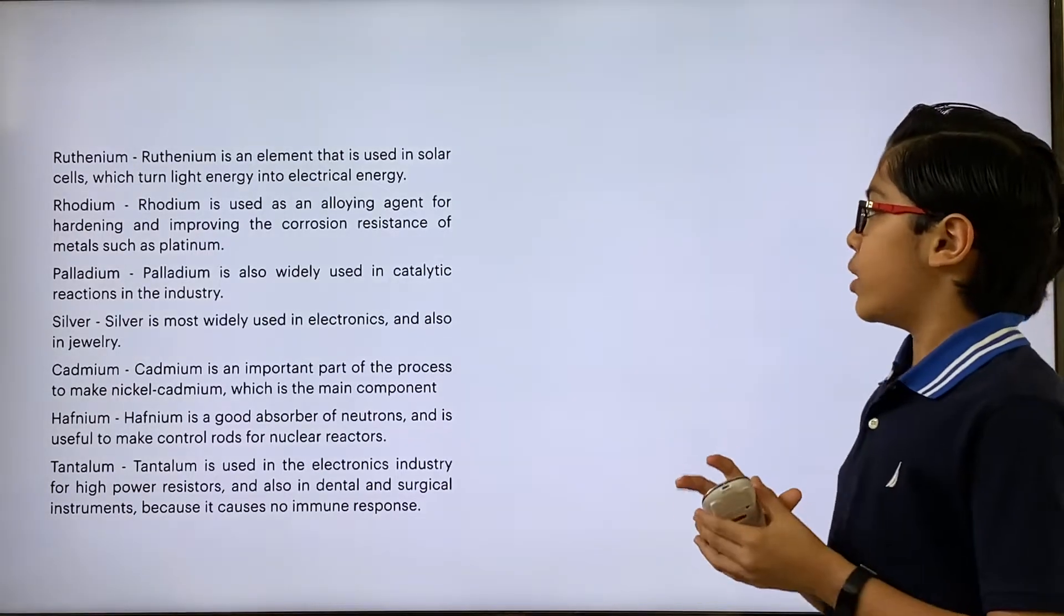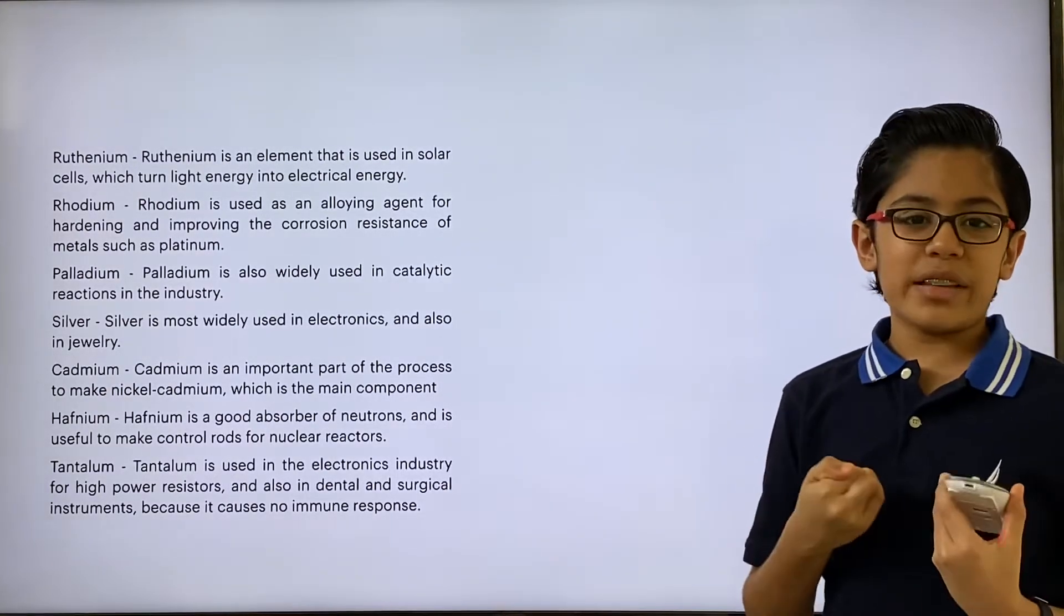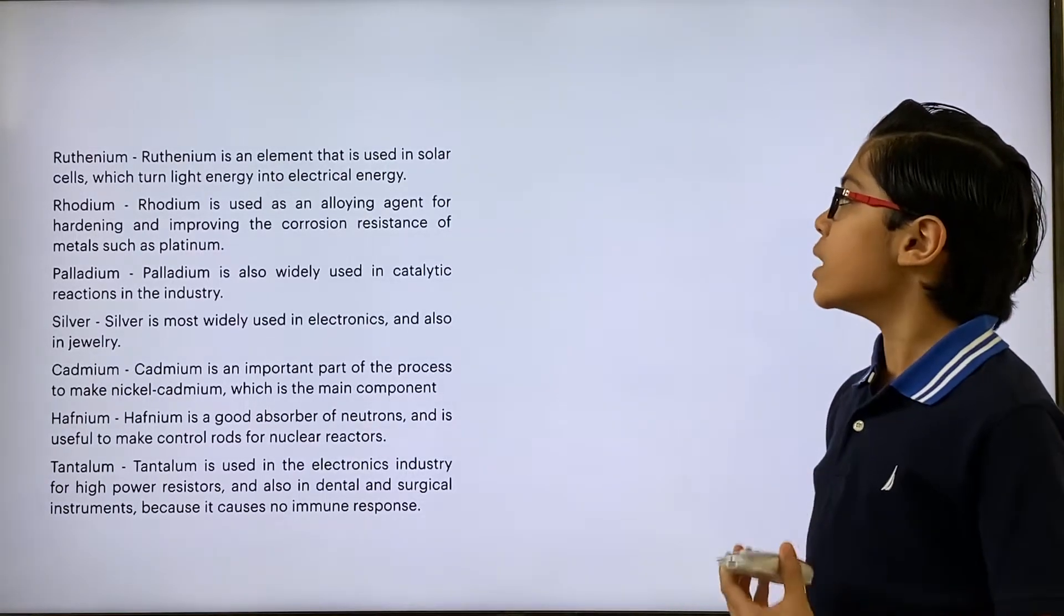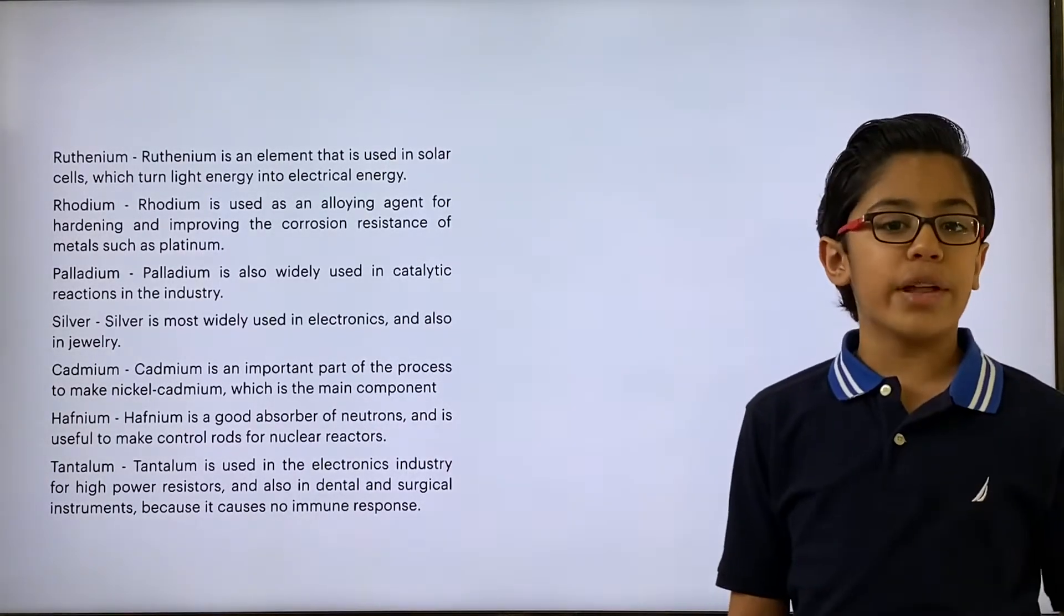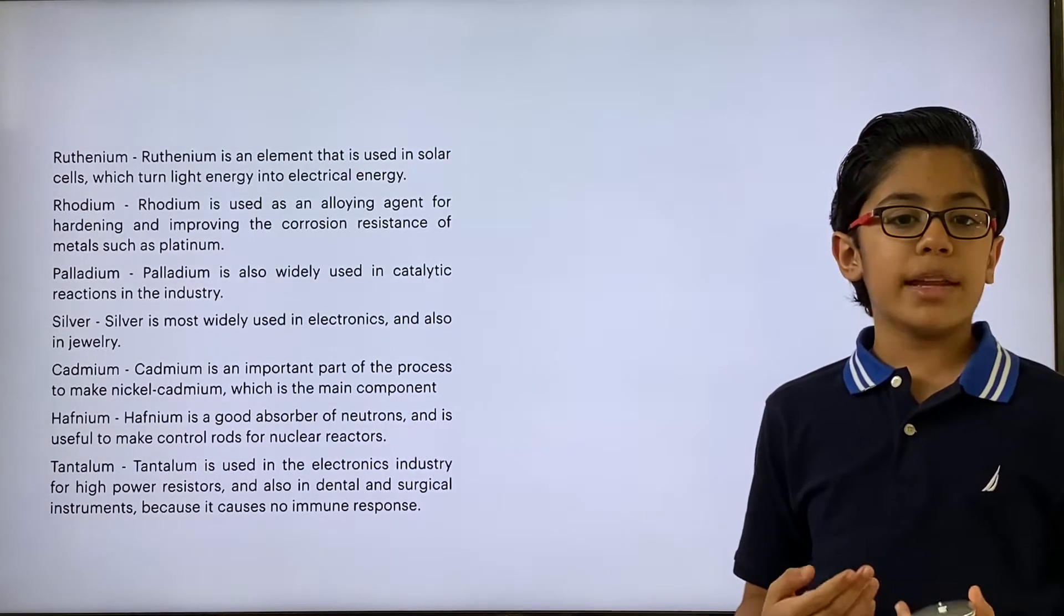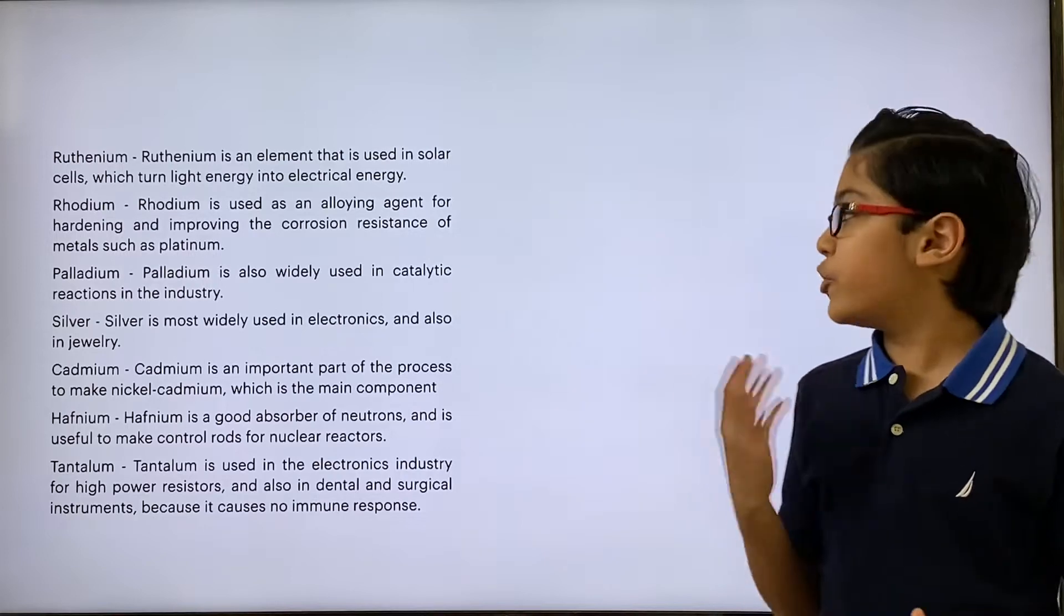Number one, ruthenium. Some of these elements I might not be able to pronounce correctly. Ruthenium is an element that's used in solar cells because its molecules have the ability to convert solar energy into electricity.